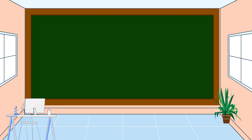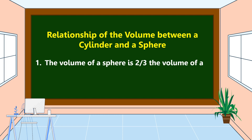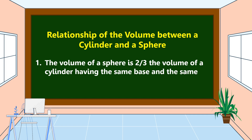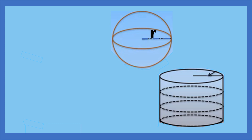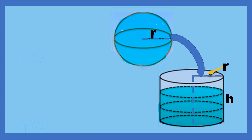Lastly, we're going to discuss the relationship of the volume between a cylinder and a sphere. The volume of a sphere is two-thirds the volume of a cylinder having the same base and the same height. The radius of the sphere equals the radius of the cylinder. If we fill the sphere with water and pour it into the cylinder, the volume of the sphere fills only two-thirds of the cylinder.